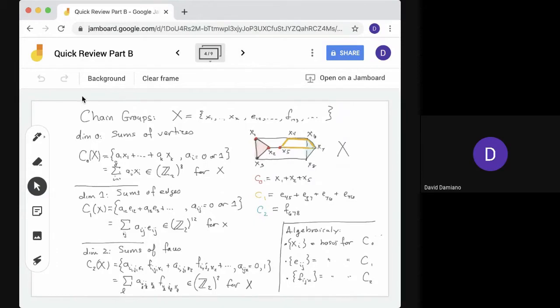Where we start is what are called chain groups. We have a simplicial complex X. We see it has vertices, edges, faces, possibly higher dimensional simplices. We're going to create a vector space for each of those dimensions. So here in dimension 0, we're going to look at sums of vertices. So here's C0 of X. The elements of it are sums a1·x1 up to ak·xk, and the coefficients ai are either 0 or 1.